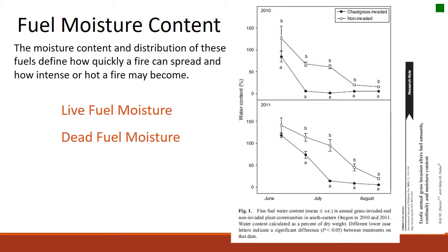A graph from Davies' paper compares a cheatgrass-invaded site to a non-invaded site. Cheatgrass changes our fire regime — it not only changes the fire regime but shifts when we can actually have fires. The cheatgrass-invaded areas show fuel moisture decreasing quite rapidly: by July, there is significantly less moisture in fuels than in a non-invaded site. When fuel moisture decreases, the probability of ignition increases because the fuel doesn't have to dry out before it can actually ignite.